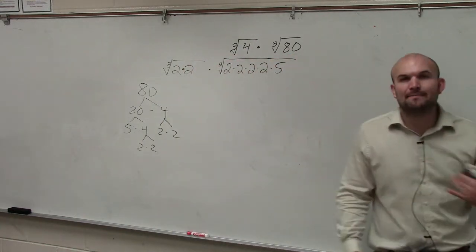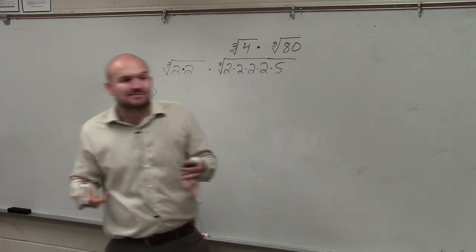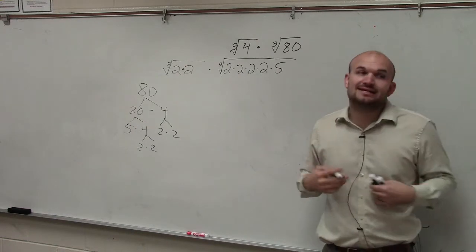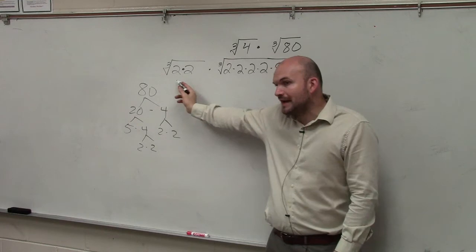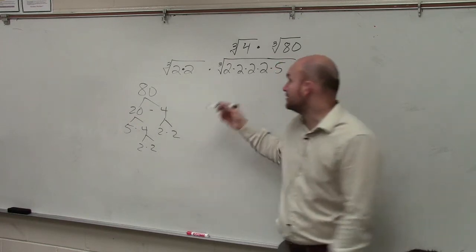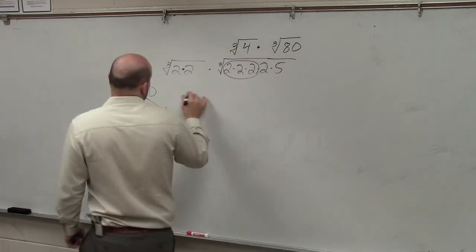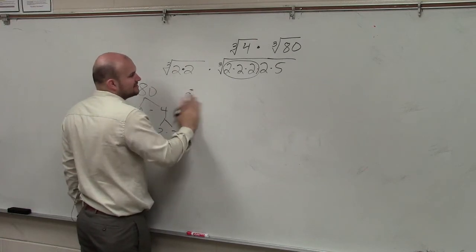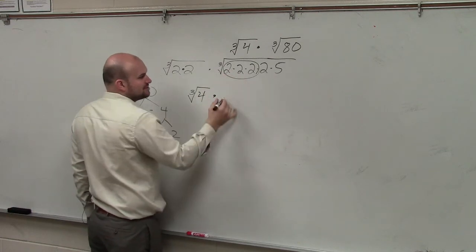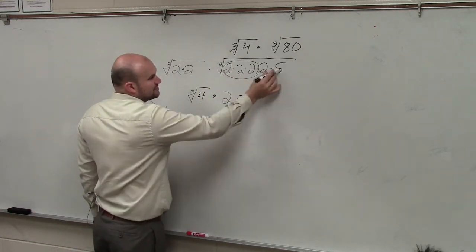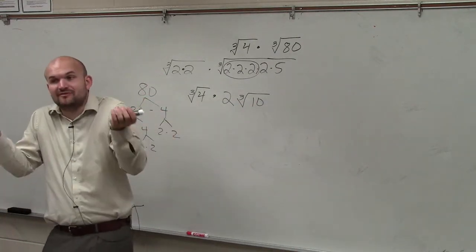Now, what does the cube root represent? The cube root represents what number multiplied by itself three times. So when we're looking at simplifying this, we're going to want to take the cube root of numbers that are multiplied by themselves three times. Under this cube root, I only have 2 multiplied by itself twice, so I can't do anything. Over here, I have three 2's multiplied by each other. So I can't do anything here — I'll keep that as the cube root of 4 — times the cube root of 2 times 2 times 2, which is 2. Cube root of 2 times 5 is 10.